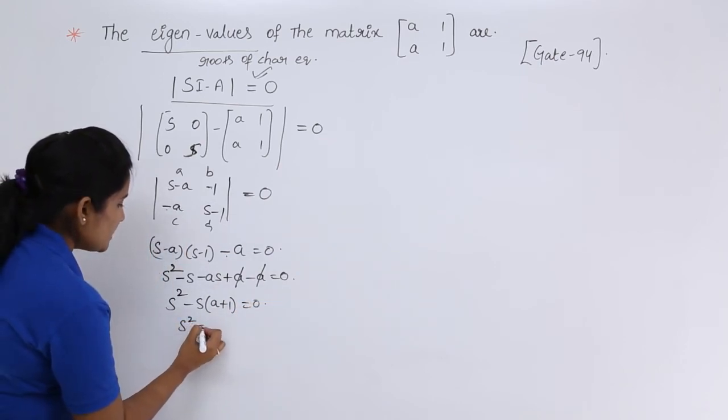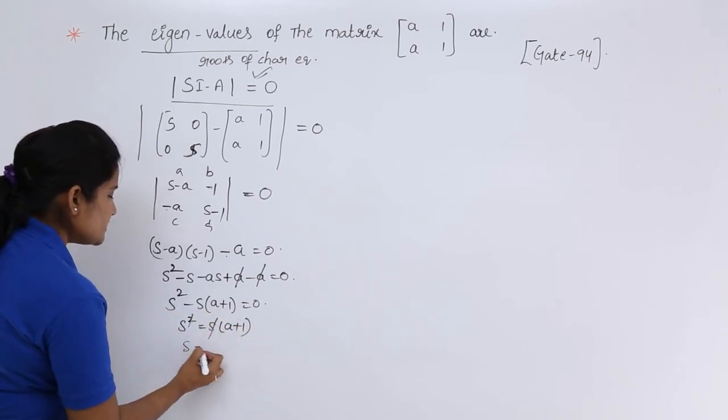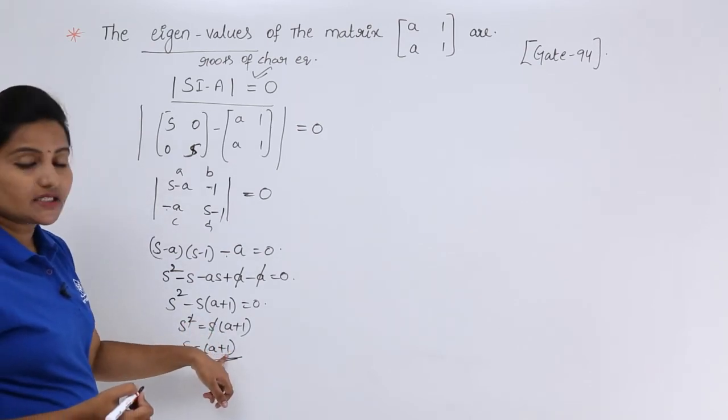S square is equal to S into A plus 1. So S will get cancelled, S is equal to A plus 1. You are going to get S is equal to A plus 1.